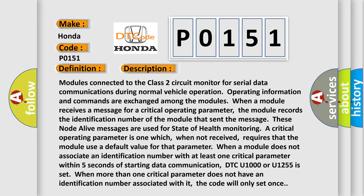Modules connected to the Class 2 circuit monitor for serial data communications during normal vehicle operation. Operating information and commands are exchanged among the modules. When a module receives a message for a critical operating parameter, the module records the identification number of the module that sent the message.